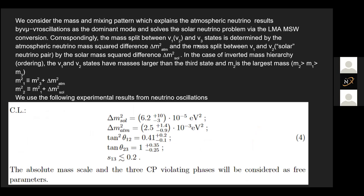In a normal mass hierarchy, you assume m3 has the most mass, then m1, m2. But in an inverted hierarchy — since you only have the delta value — you assume m3 is lighter than m1 and m2. We know m2 is greater than m1 by solar neutrino convention. Either m3 is greater than m2 or lesser than m1. The absolute mass scales and the three phases are considered free parameters because as of now, we don't know the exact mixing angles since Majorana particles aren't even confirmed. The phases rho and sigma are considered free, whereas delta from the PMNS matrix is real.